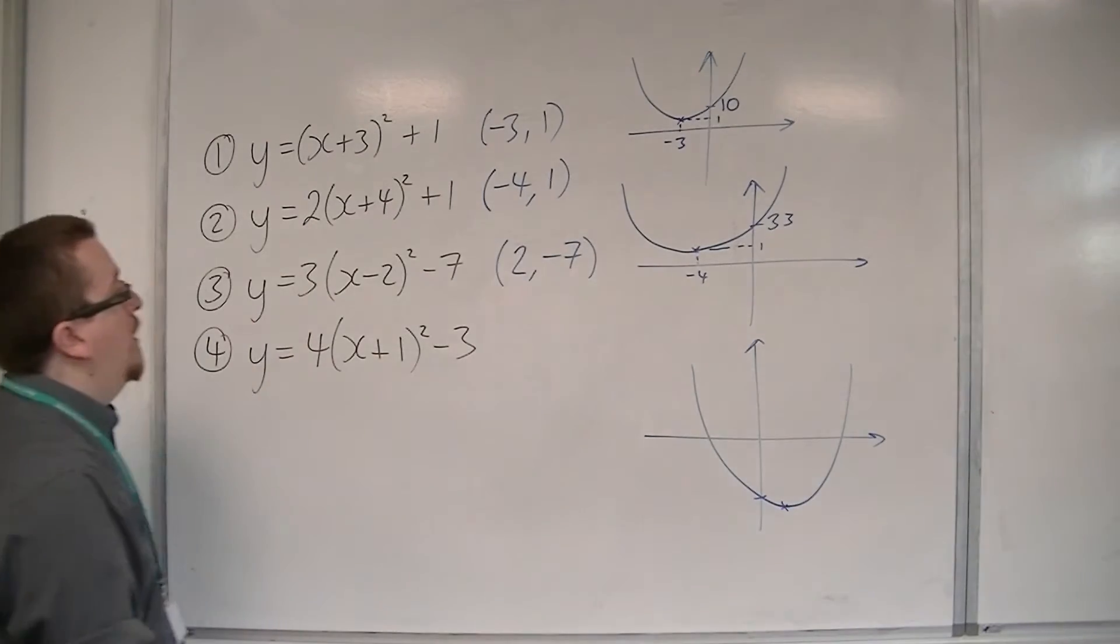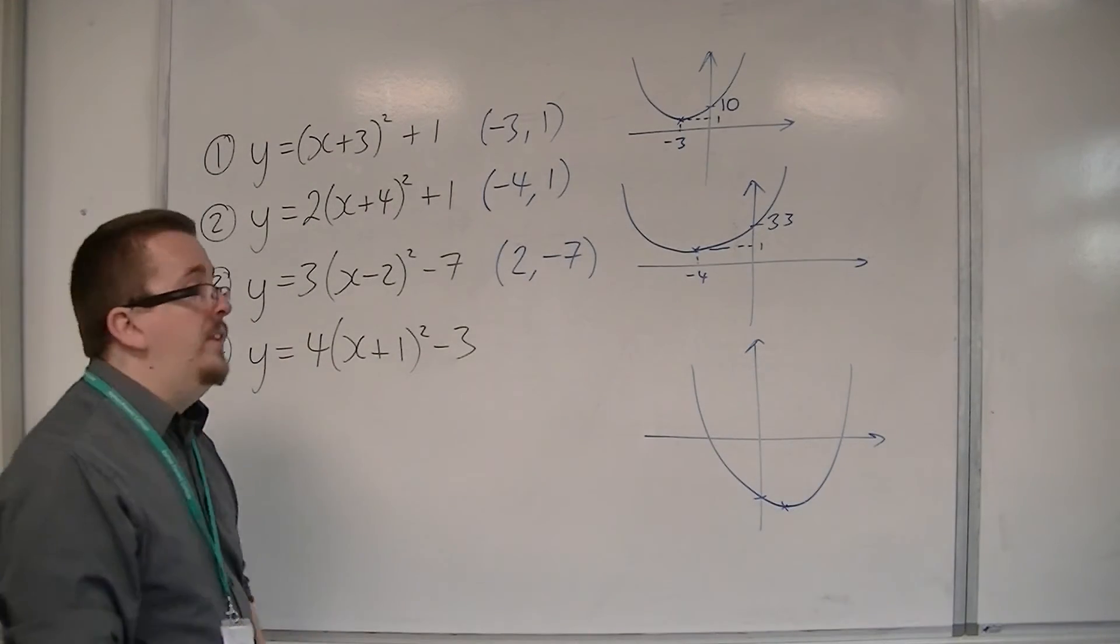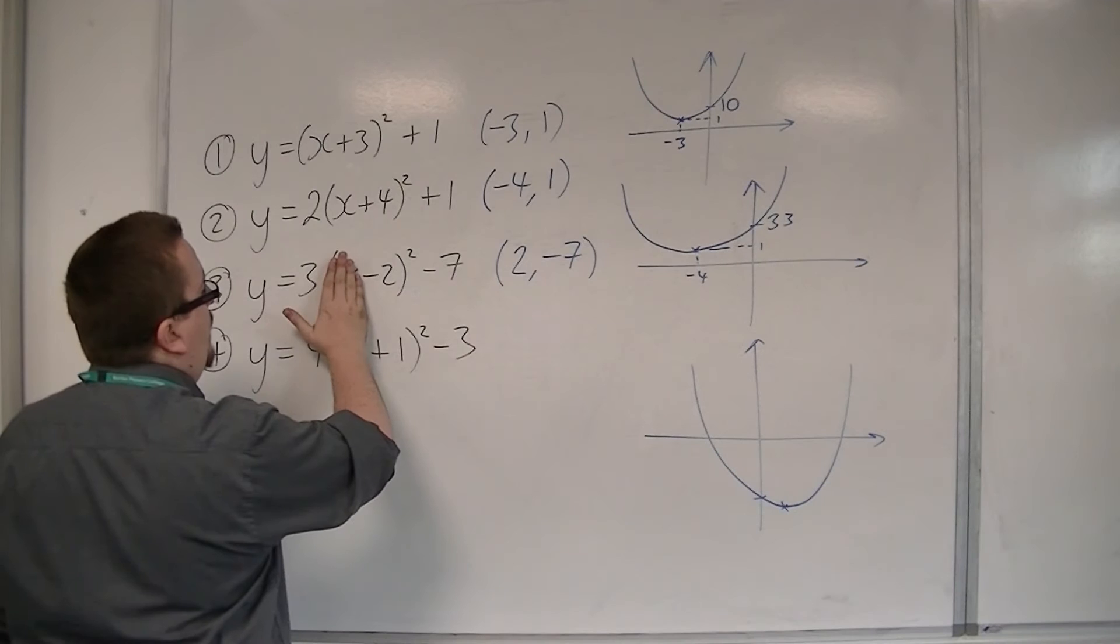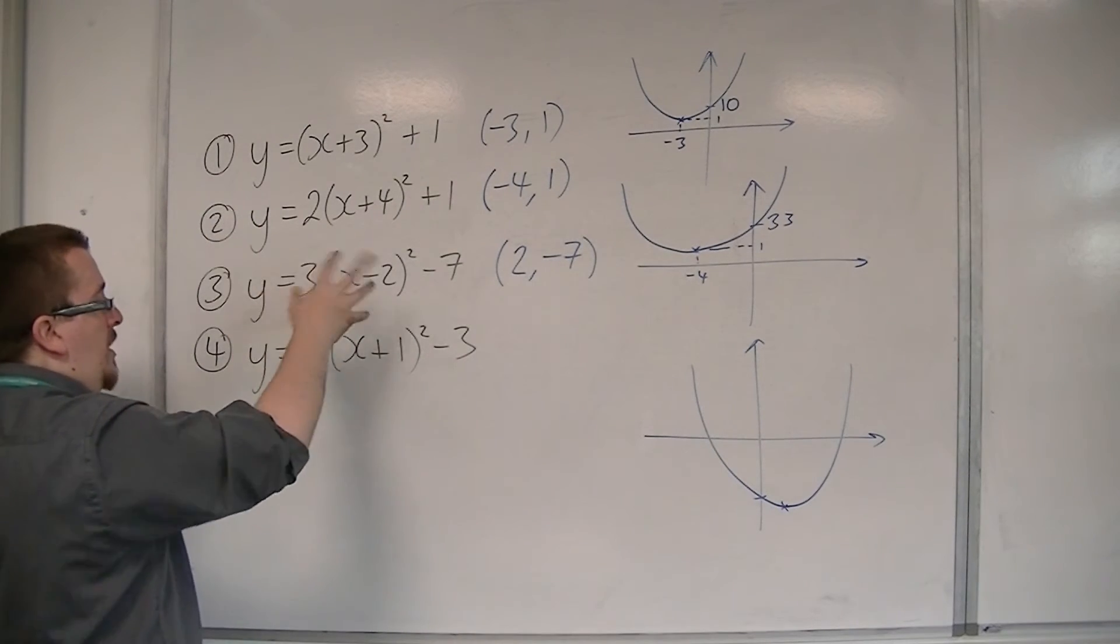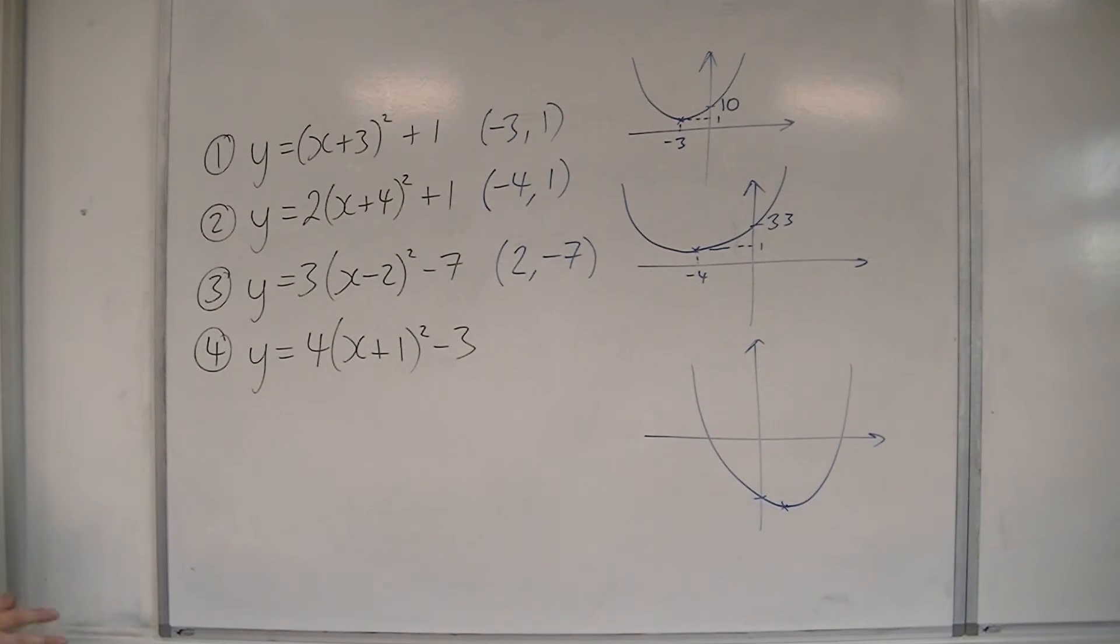I am interested in where it crosses the y-axis. So that's when x is 0. So when x is 0, I get minus 2 squared, so that's 4. 3 times 4 is 12, take away 7 is 5.